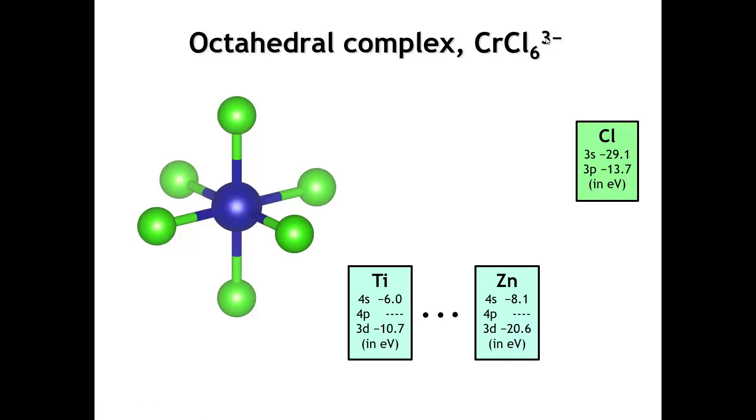The first thing to figure out is which atomic orbitals we need to include to make up our molecular orbitals. Going back to the hydrogen-helium example, we're going to get the most interaction between orbitals that are similar in energy. If we look at the energies of the valence orbitals on chlorine, the 3s orbital is about minus 29 electron volts and the 3p orbital is more like 13 to 14 electron volts.